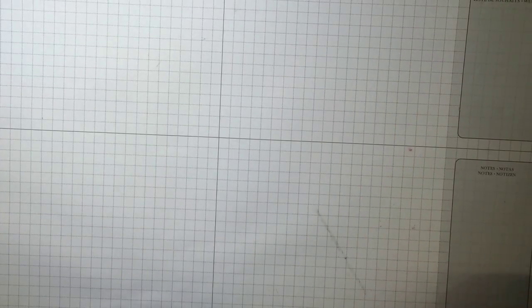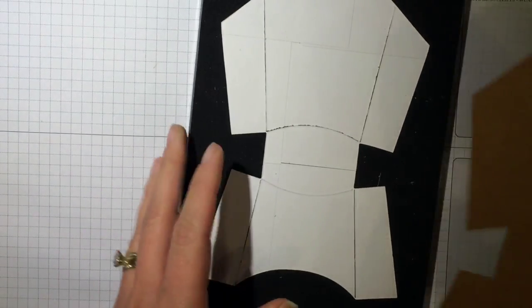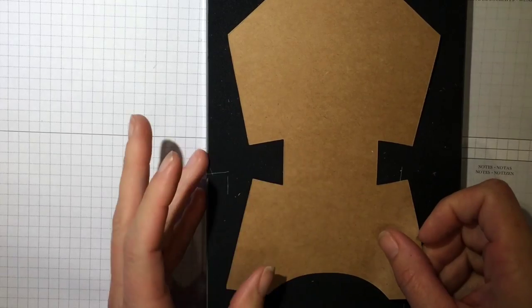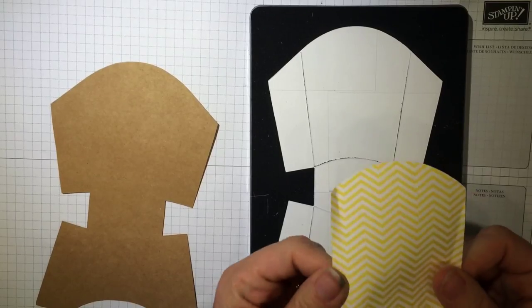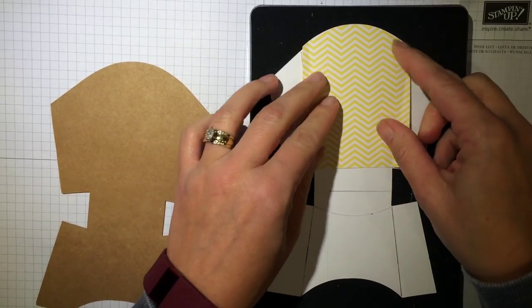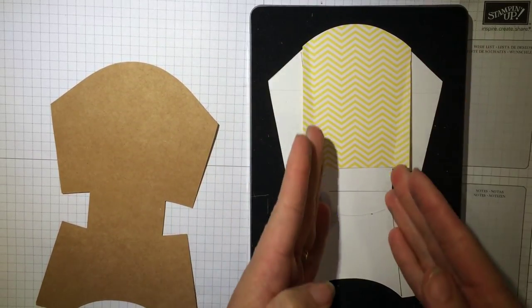Okay, the first thing you need to do is to get your fry box die and cut out a craft fry box. Then you're going to get a piece of Daffodil Delight DSP from the Bright Stack. You want to cut out just this section right here.